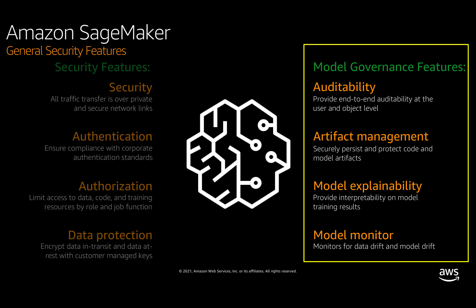SageMaker also offers several built-in model governance features in the areas of auditability, artifact management, model explainability, and model monitor. SageMaker provides mechanisms to allow customers to set up end-to-end auditability and ensure that artifacts are protected as part of your artifact management strategy. SageMaker also provides model explainability, which we'll cover in a few slides. Finally, we have capabilities that allow you to monitor your model for signals that the model is degrading over time through Amazon SageMaker Model Monitor.